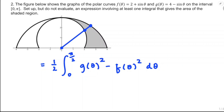If you wanted to write this as two separate integrals — one-half the integral from zero to pi over two of g of theta squared d-theta, minus one-half the integral from zero to pi over two of f of theta squared d-theta — you'd be welcome to do that. Just remember the d-thetas. If you have more than one integral, you have to include those differential pieces at the end, else you could be losing credit.